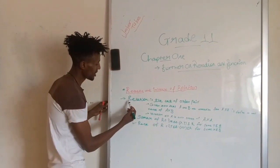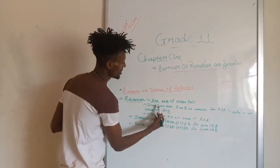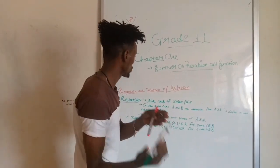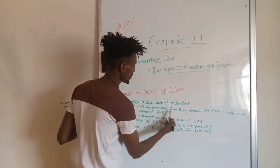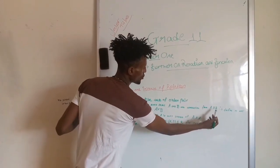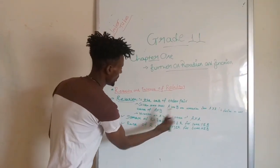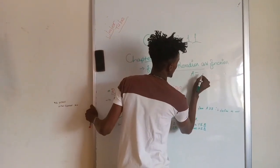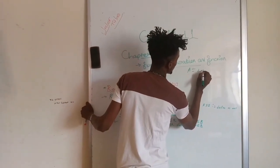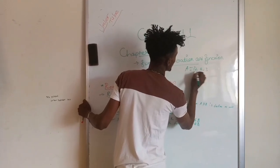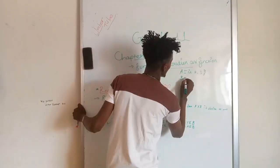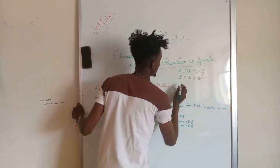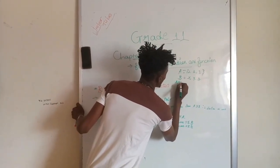A relation is the set of ordered pairs. Given two sets A and B, a relation from A to B is defined as any subset of A cross B. For example, set A is {1, 2, 3} and set B is {X, Y, Z}.